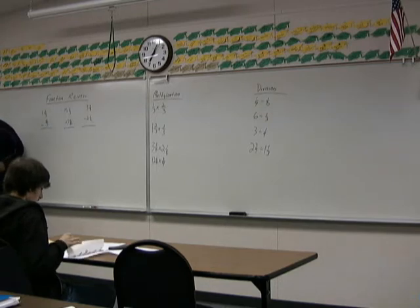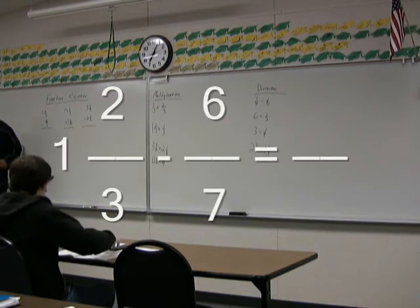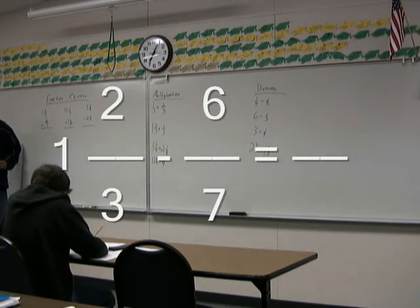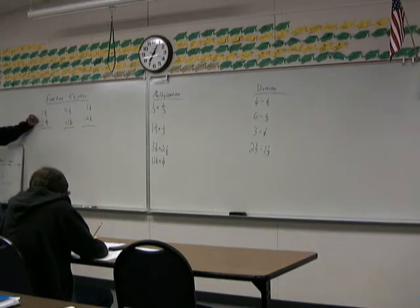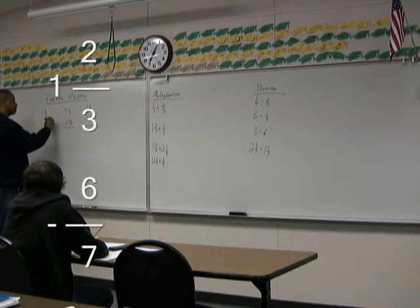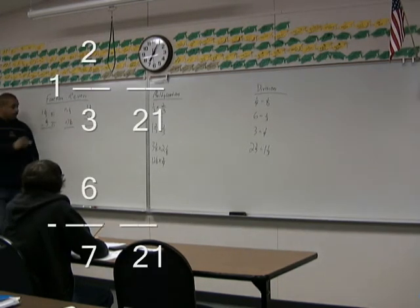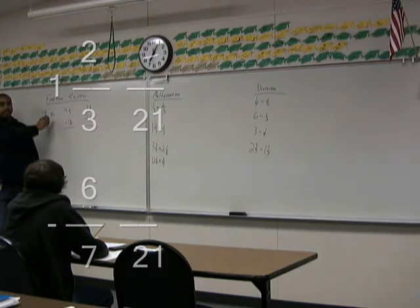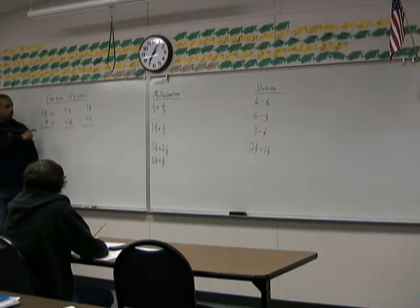Does anyone remember what's the first thing we do when we come across a fraction? What's the lowest common denominator? What's the lowest common denominator of this one going to be? Twenty-one. How do we find this number out? We find three times seven. And three times seven is twenty-one.